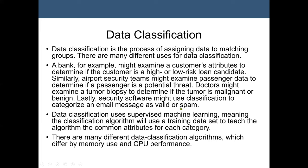So data classification uses what we call supervised machine learning, meaning the classification algorithm uses a training dataset to teach the algorithm the common attributes for each category. There are many different data classification algorithms, which differ by memory use and CPU performance.